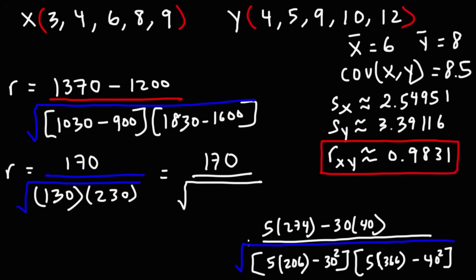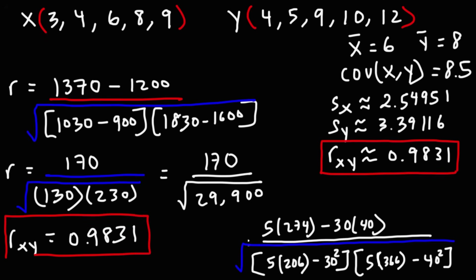130 times 230 is 29,900. So the result is 170 divided by the square root of 29,900, which gives 0.9831 rounded to four significant figures. We can see that these two answers are the same, confirming both formulas give the same correlation coefficient. You can calculate it using covariance or using the direct formula.